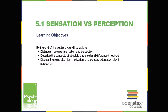The sensitivity of a given sensory system to the relevant stimuli can be expressed as an absolute threshold. Absolute threshold refers to the minimum amount of stimulus energy that must be present for the stimulus to be detected 50% of the time. For example, it's been estimated that on a clear night, the most sensitive sensory cells in the back of the eye can detect a candle flame 30 miles away. Under quiet conditions, the hair cells — the receptor cells of the inner ear — can detect the tick of a clock 20 feet away.